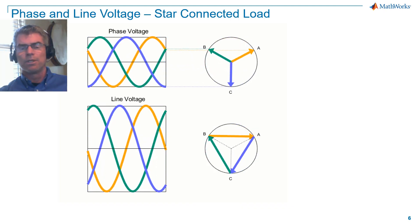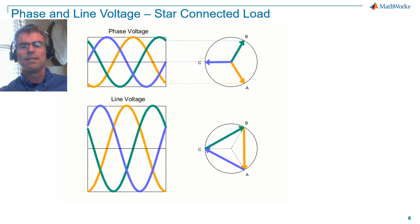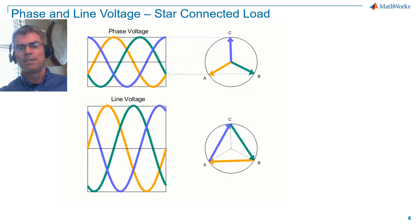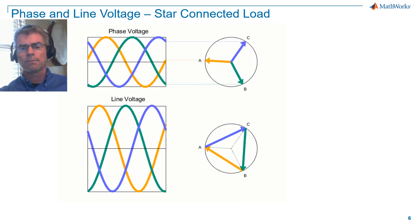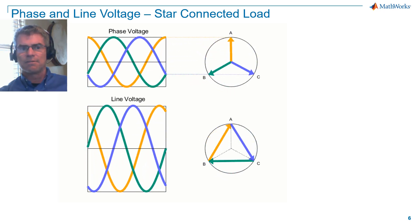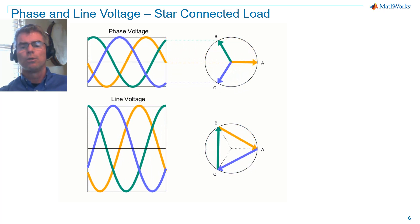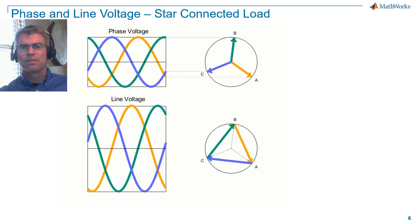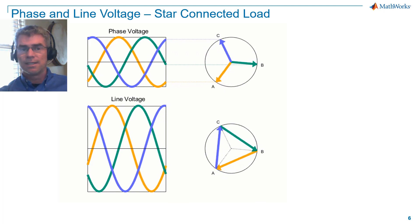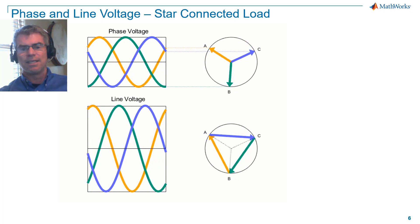Here we are seeing the phase voltage and line voltage for a star connected load. On the left we see the instantaneous voltage as time progresses, and on the right we see a vector representation of the voltages. For phase voltage, we see that the vectors are tracking the instantaneous values as expected. But for the line voltages, we observe two things: first, the line voltage magnitude is greater than phase voltage magnitude, and second, we do not see a clean tracking of the vector values against the instantaneous values.